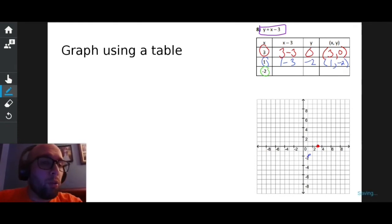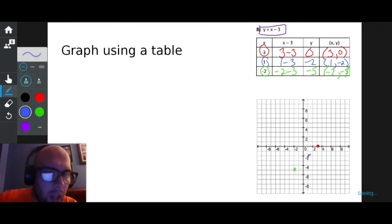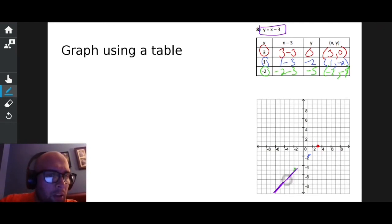X is negative two. So I have negative two minus three. Negative two, take away three, negative five. Negative two, negative five. Go left two, go down five, put a dot. I have my three dots. You can now draw a perfectly straight line through those three dots. There you have it.